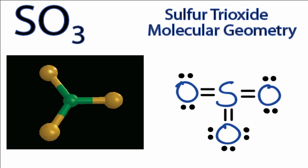We can also use the AXN notation to determine the shape of SO3. A, that stands for the central atom, the sulfur. X, that's the number of atoms bonded to that central sulfur. We have three oxygens. And N, those are the non-bonding electron pairs. And we don't have any non-bonding electron pairs on the sulfur. So we won't worry about N. So we have AX3 as our notation for the SO3 molecule.